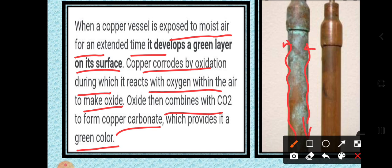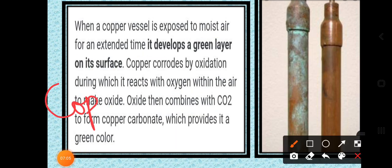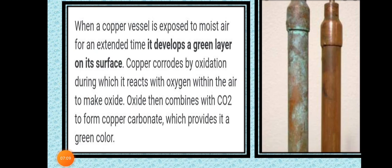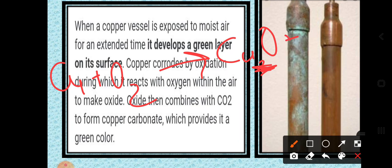In the first step, copper (Cu) reacts with oxygen (O₂) to give copper oxide — either Cu₂O or CuO. In the second step, that copper oxide reacts with carbon dioxide, ultimately giving Cu₂O₃ (copper carbonate). This two-step reaction produces the coating on copper surfaces.